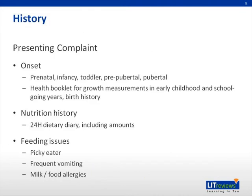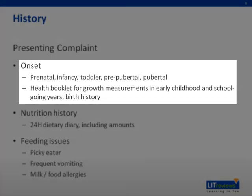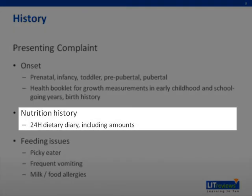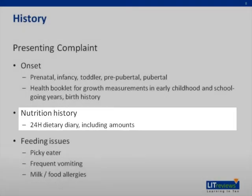When taking the history, you need to ask about the onset of concerns about the child's growth — has this child always been small since birth and possibly even in utero, or has something happened more recently? The health booklet can often provide many details, including birth details and height and weight measurements over time. When taking a dietary history, it is more effective to take a 24-hour food diary than to ask the parent subjectively if the child eats well.